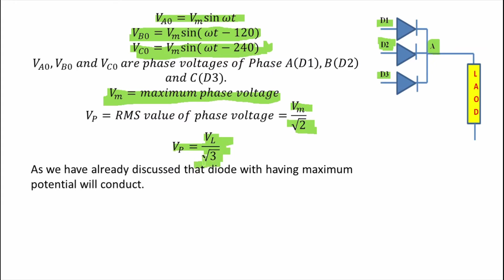Now we will start the main topic. As I already discussed in my previous lecture, if two or more diodes are connected with their cathodes connected at a single node, then the diode with maximum potential will conduct. Now we will utilize this concept here.